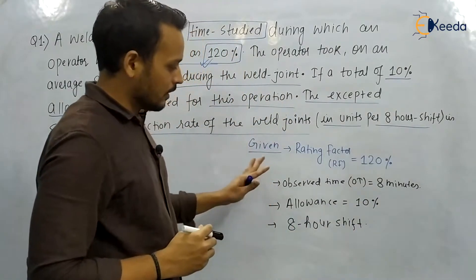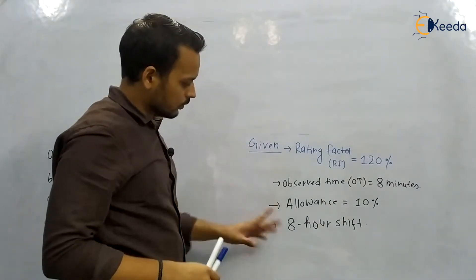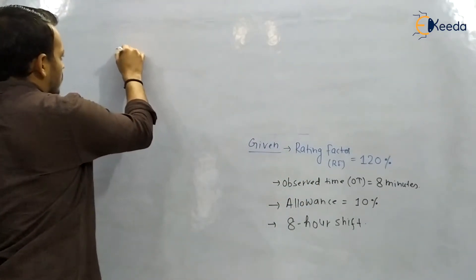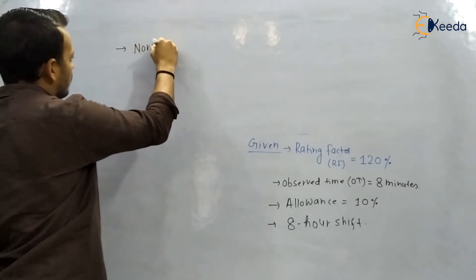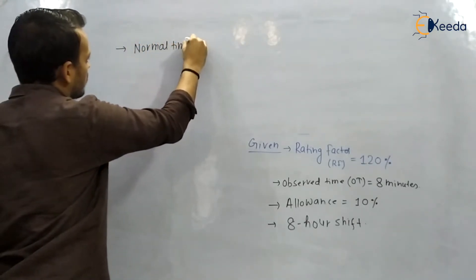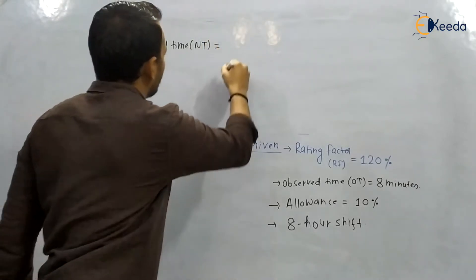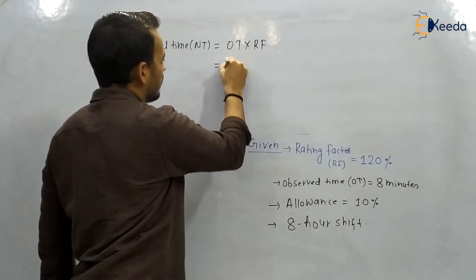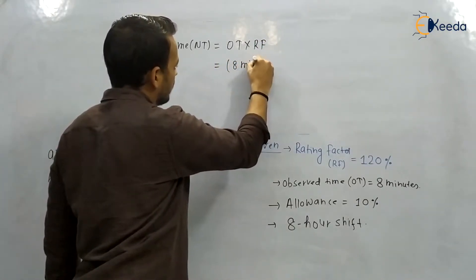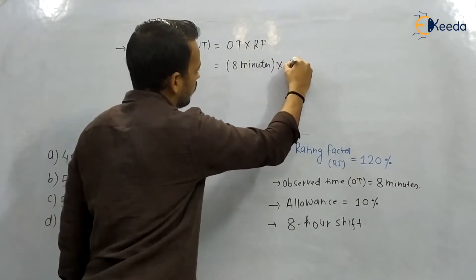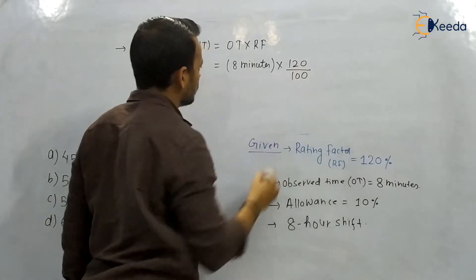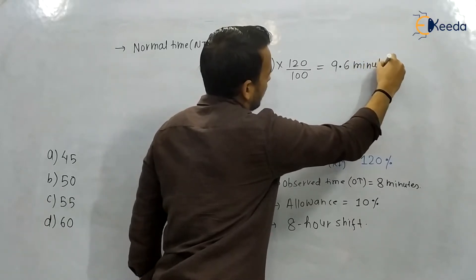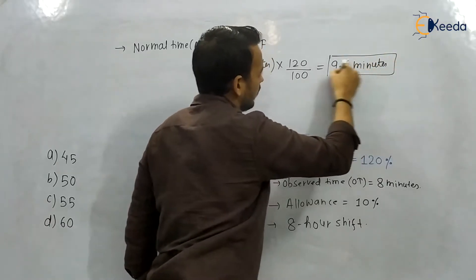They are asking the standard production rate, so we will first calculate normal time, then standard time. Normal time NT is the product of observed time into rating factor. Observed time is eight minutes and rating factor is 120%, that is 120/100. So normal time is 8 × 1.2 = 9.6 minutes.